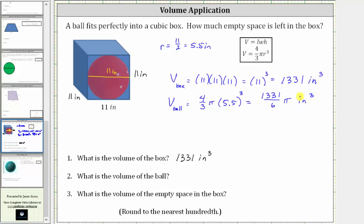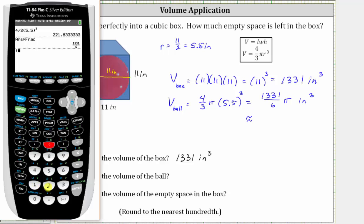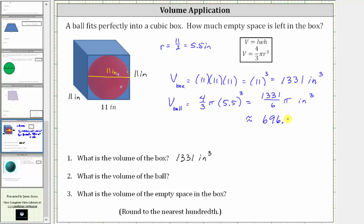Now let's also get the approximate volume to the nearest hundredth. We have 1331 divided by six times pi, enter. Notice how there's a nine in the third decimal place, and therefore we round up. The approximate volume is 696.91 cubic inches. So the exact volume is 1331 divided by 6 pi cubic inches, which is approximately 696.91 cubic inches.